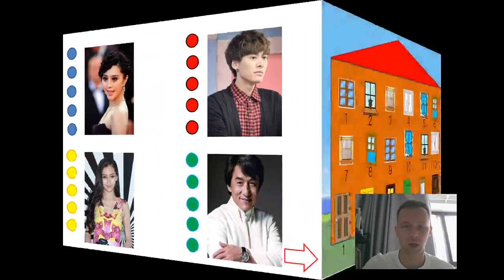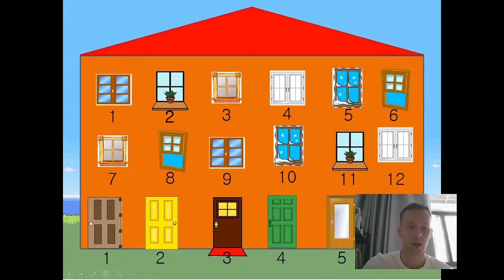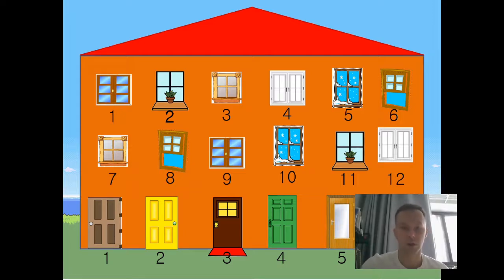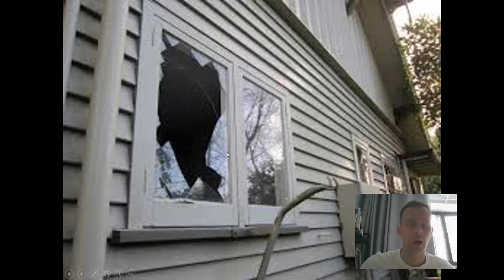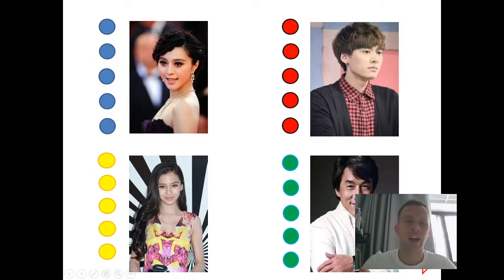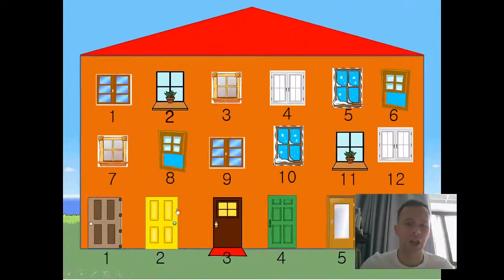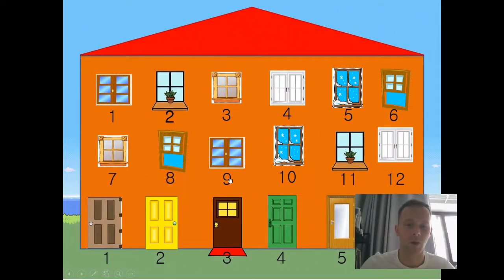We're going to go to the next page. Here we have windows and doors. Some of the windows are broken and some of the doors are locked. You'll invite the first team to choose a window or door. For example, I choose window nine. The window is broken. If the window is broken, the team will not get a point. Unlucky, team number one.